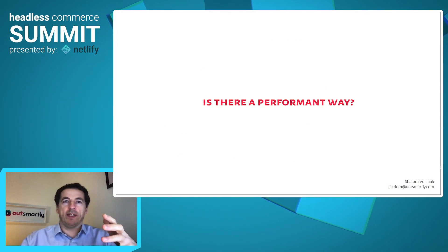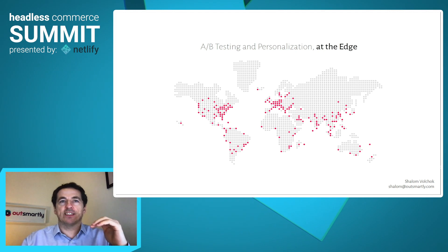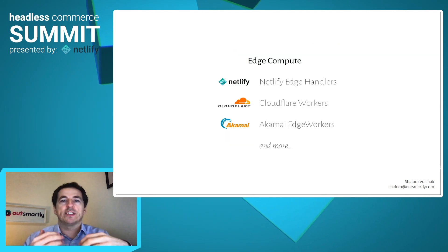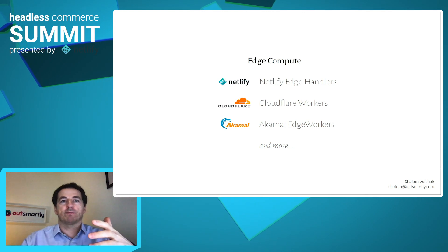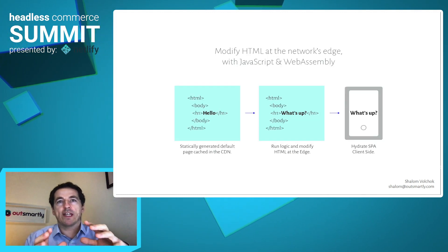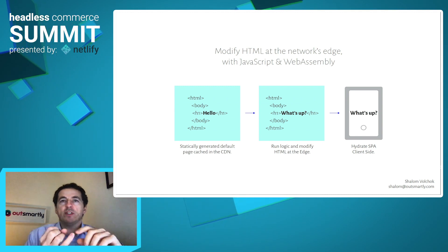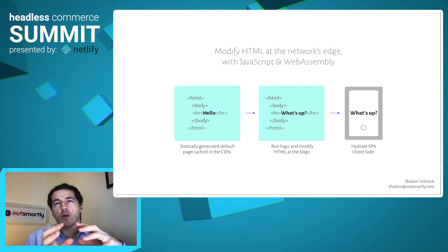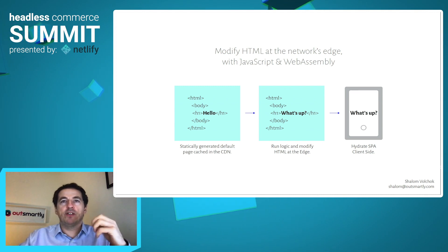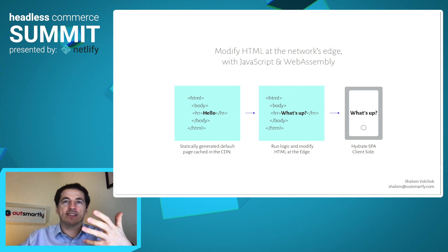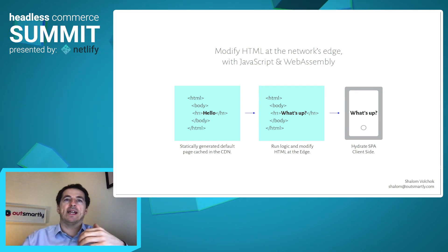So is there a performant way? The dream for performance would be doing these dynamic modifications at the CDN layer within the CDN's cache itself. And that is, in fact, possible today with the emergence of edge compute — offered by Netlify edge handlers, Cloudflare Workers, Akamai edge workers, and a number of others. On this foundational compute layer, we can build a new architecture with three fundamental pieces: first, caching a default page within the CDN; then on a per-request basis, running whatever logic is needed and making modifications directly to the cached HTML — using geographic information, cookies, query parameters, A-B testing logic, and much more; and finally, assuring the application hydrates properly client-side and continues to work with client-side navigation.